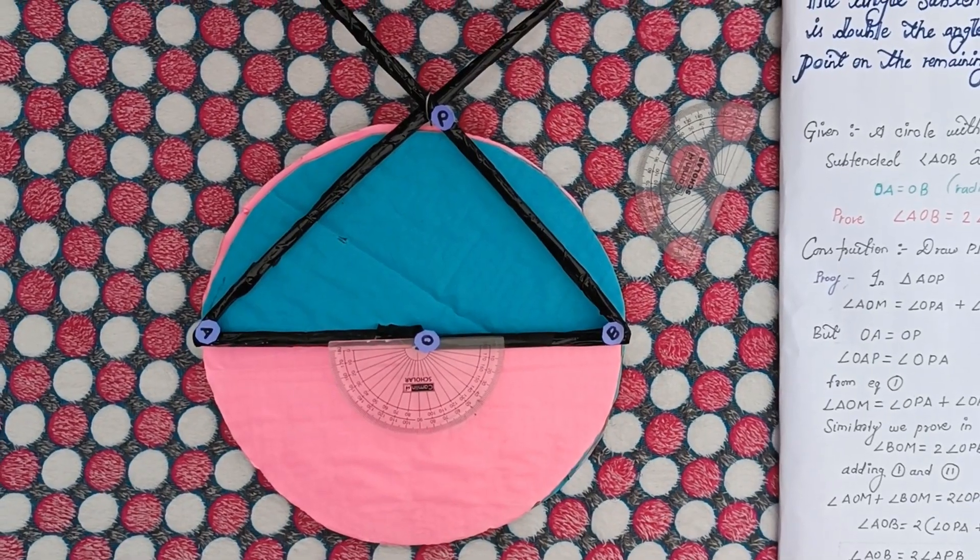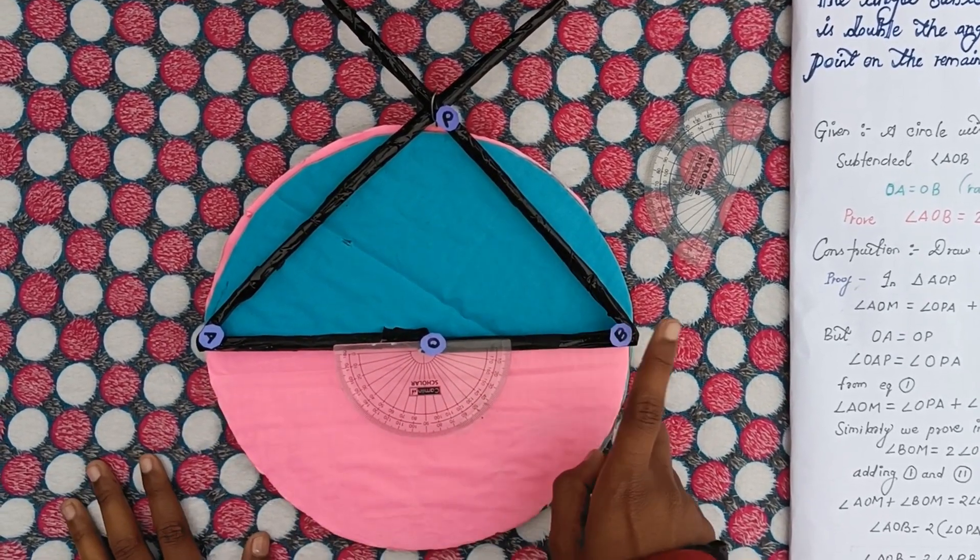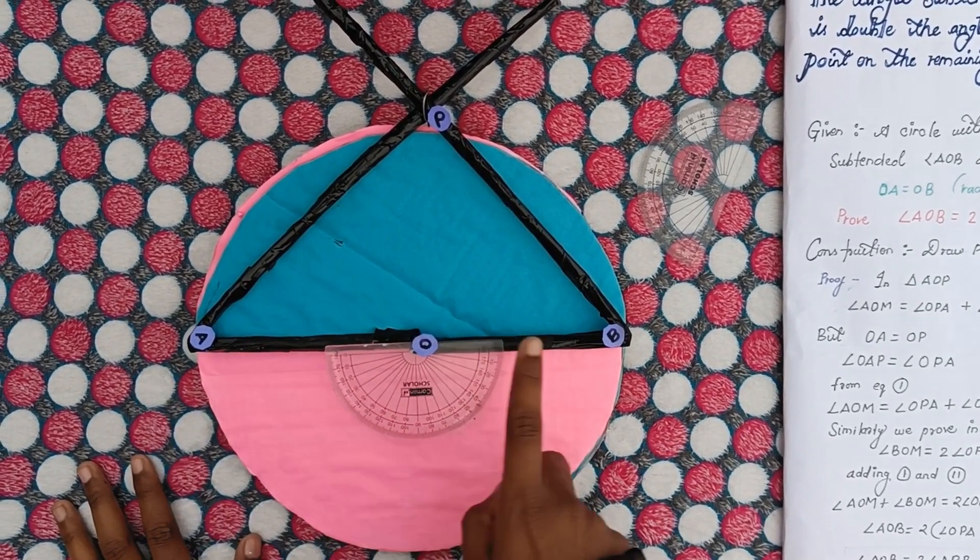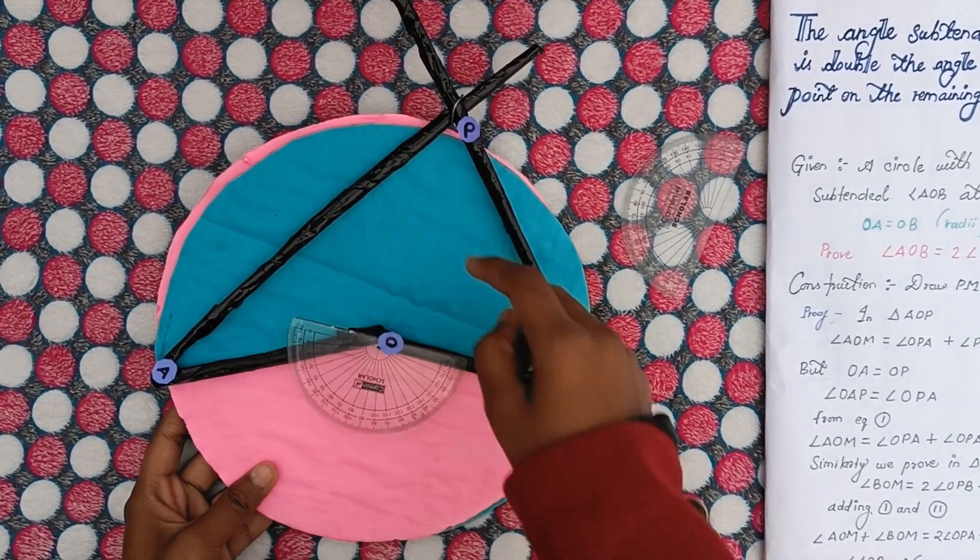By the help of this model, as we can see that this is an arc A-O-B subtended an angle at the center, angle A-O-B. Here we can see that angle A-O-B is twice of the angle A-P-B.